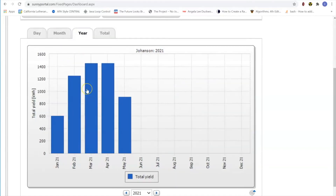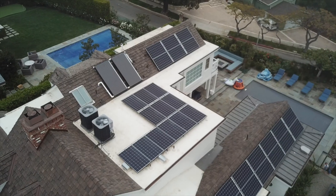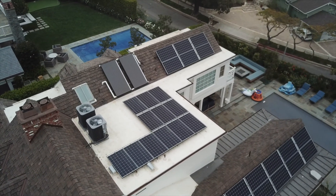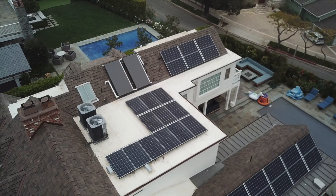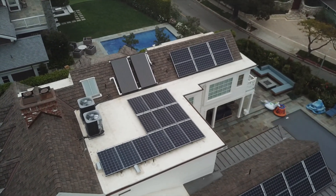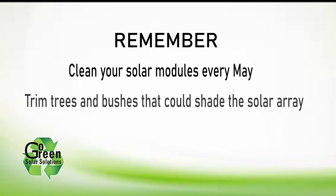You can see daily, monthly, yearly, or total power production. By looking closely at these numbers, we can tell if there is shading or dirt buildup on the solar modules that could compromise the performance of the system. Remember to clean your solar modules every May and trim foliage such as trees and bushes that could shade your solar array.